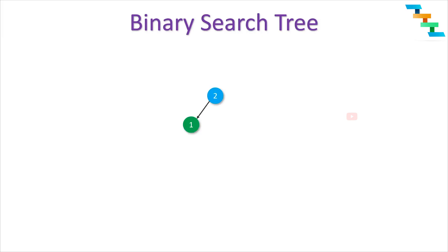Before seeing this problem, we will learn what is a binary search tree. The binary search tree is a tree where the value in the root node is always greater than or equal to the value present in the left node. Here the root node has value 2, the left side has value 1 which is lesser than 2, and the right subtree has value 3 which is greater than 2. This is applicable for the complete right subtree and complete left subtree — all values in the left subtree must be lesser than the root node and all values in the right subtree must be greater than the root node.